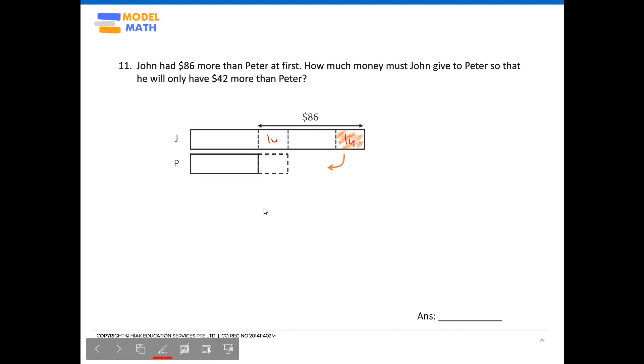The question states that after transferring this amount to Peter, he would still need to be $42 more than Peter, which would mean that this block is $42.